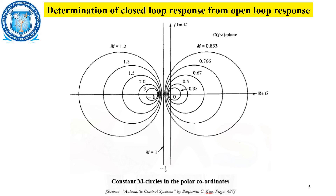That is, we have taken G(jω) = X + jY — our open loop transfer function. From that, we framed the closed loop transfer function and represented it in circle format. From these circles, we can obtain the response.